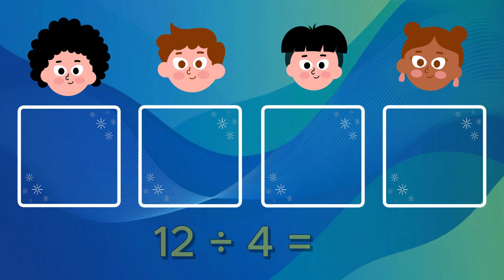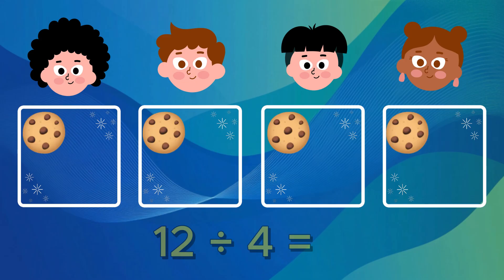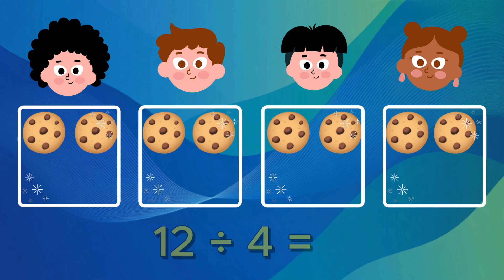Now, we want each friend to have a cookie. So next, let's fill the boxes one at a time until all 12 cookies are gone. 1, 2, 3, 4. Then we go back to the first box again and repeat that. 5, 6, 7, 8, 9, 10, 11, 12. That's all the cookies.